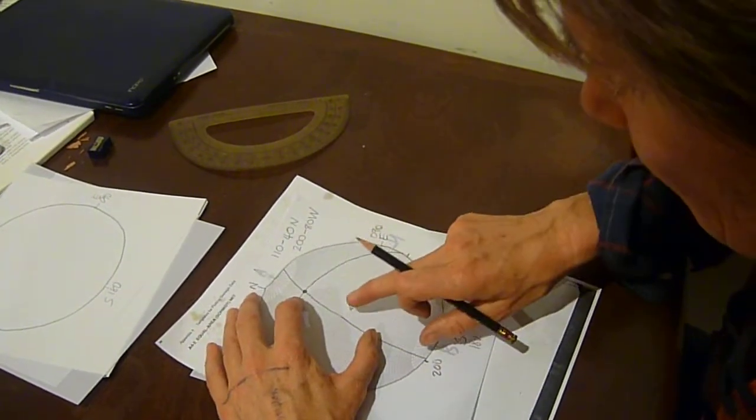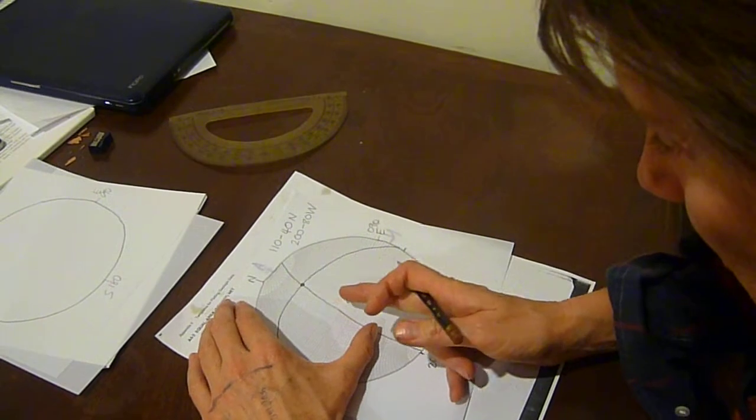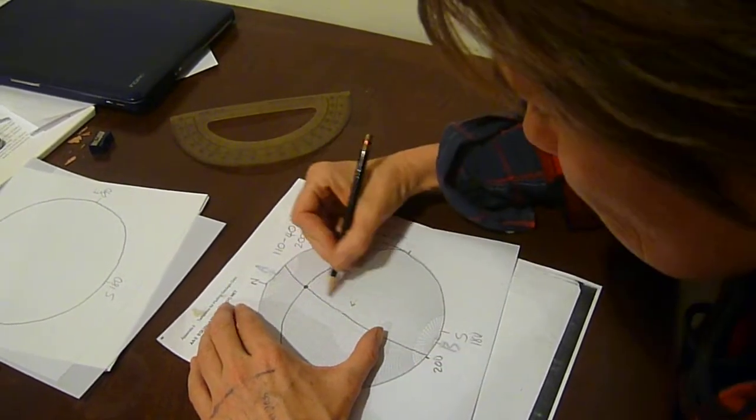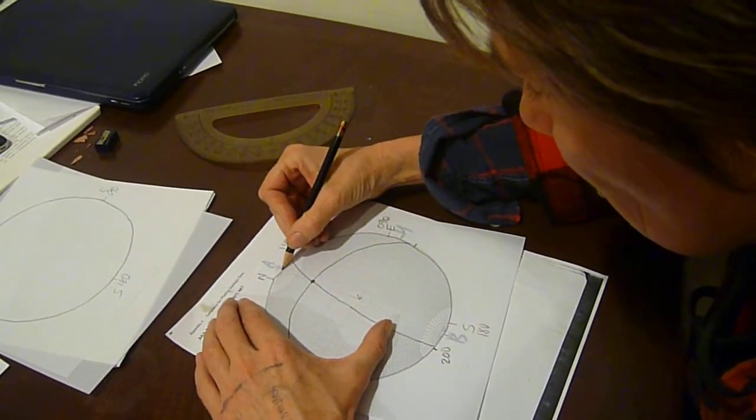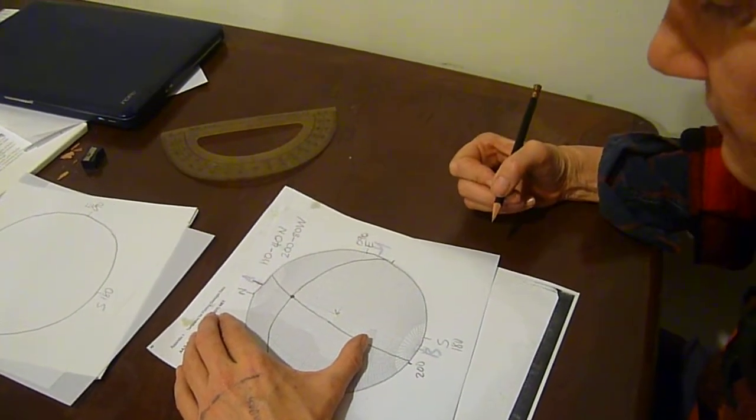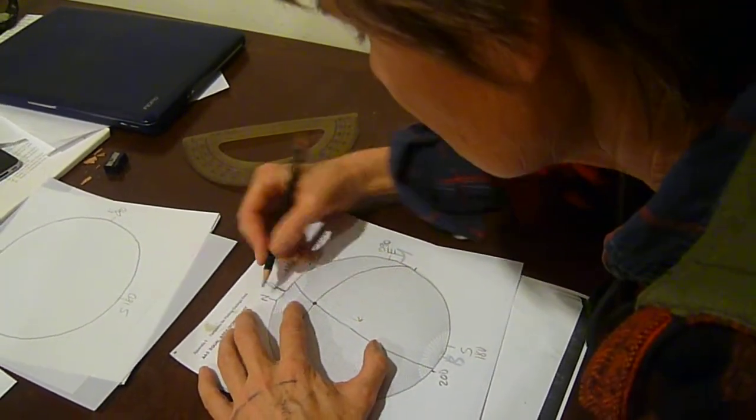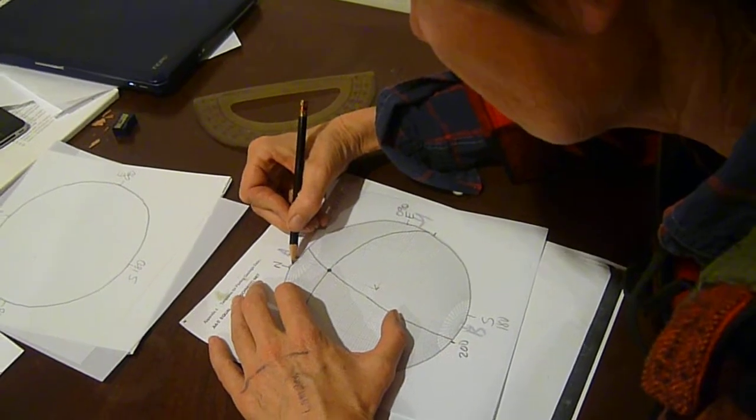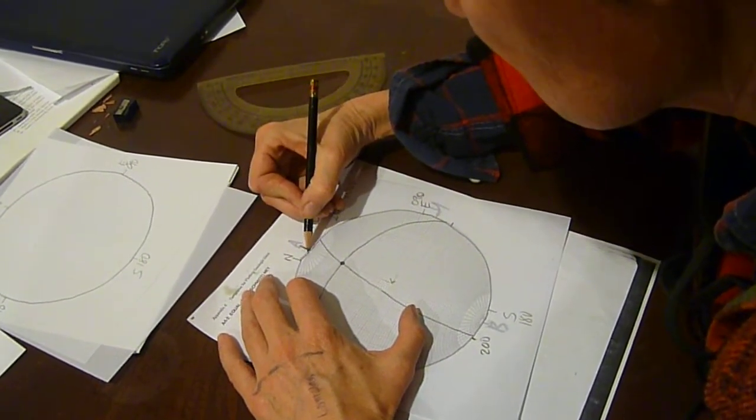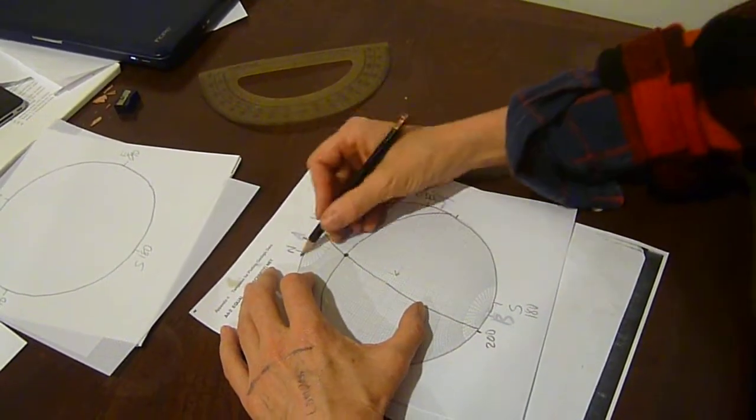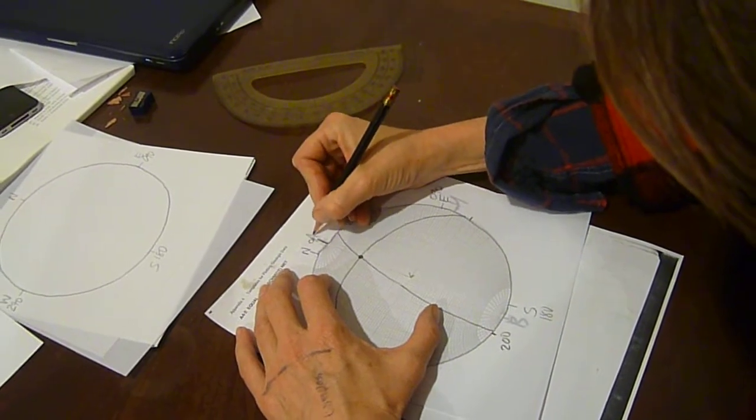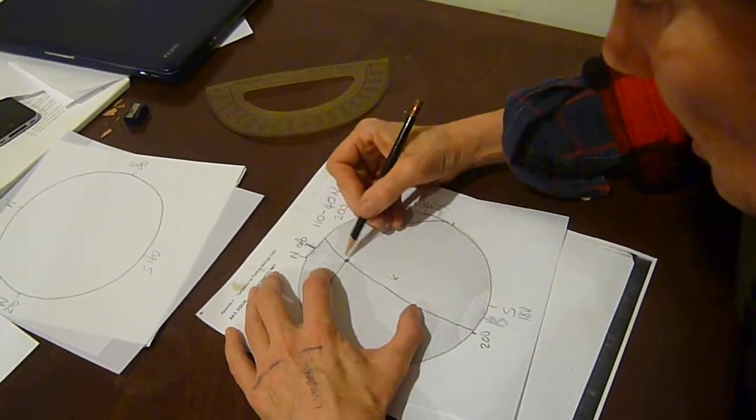And pretend that you're standing on the drawing pin, and look out along that straight line to the edge of the stereonet, and that will be the bearing. And in fact, that bearing is 2, 4, 6, 8, 10 degrees away from north, so it's 010.